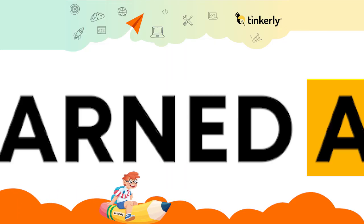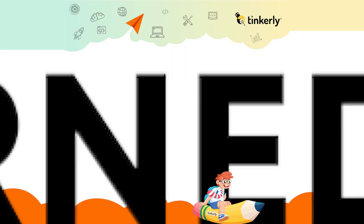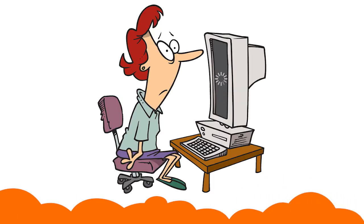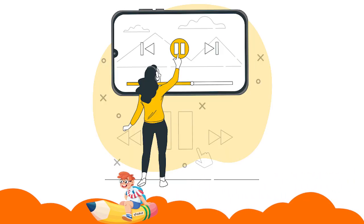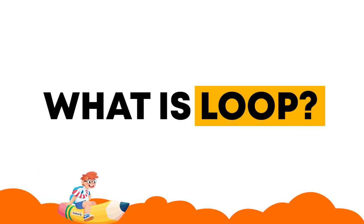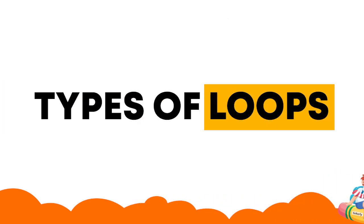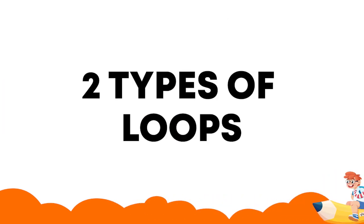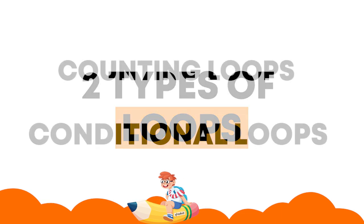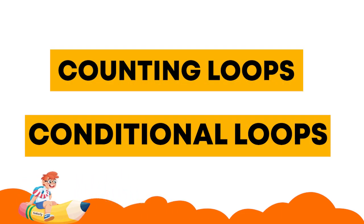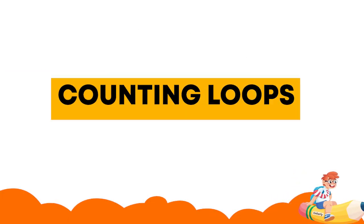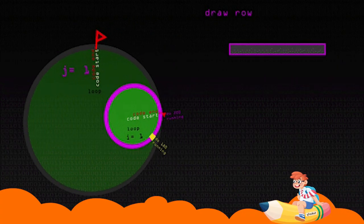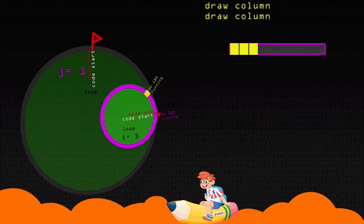In the last video we learned about loops. If you haven't watched it or need to revise it, then pause this video and watch what is a loop first. Today we will talk about types of loops. There are two types of loops: counting loops and conditional loops.